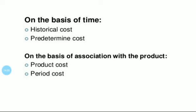The next classification is classification on the basis of time. On this basis, the costs are classified into two: historical cost and predetermined cost. Historical costs are the costs which are incurred after the event takes place — they are nothing but actual costs. Predetermined cost is the cost which is computed in advance of production. The predetermined cost is also known as standard cost, which is determined in advance of production.